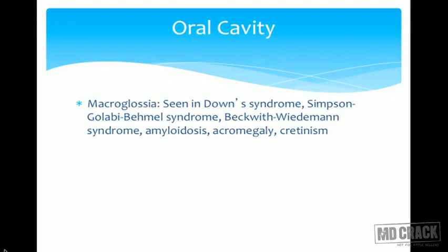Macroglossia, meaning a large tongue, is seen in Down syndrome, Simpson-Golabi-Behmel syndrome, Beckwith-Wiedemann syndrome, amyloidosis, acromegaly, and cretinism.